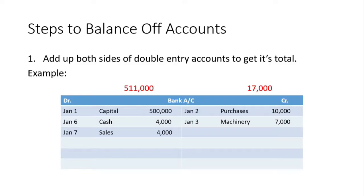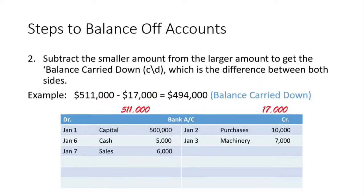We're going to look at the first step of balancing off double entry accounts. The first step is to add up both sides of the double entry account to get their total. In this example, we have a bank account — the debit side adds up to $511,000 and the credit side adds up to $17,000.